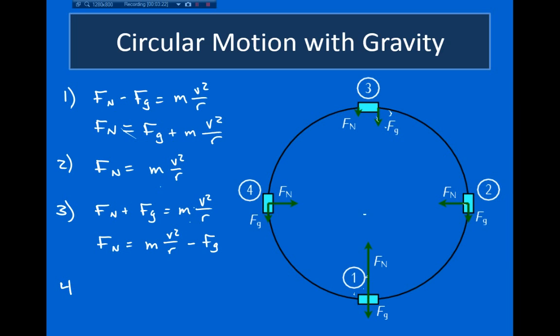Finally, considering the fourth point — it's pretty much the same as point 2. So the normal force is just equal to mv²/r.